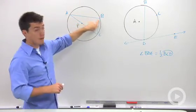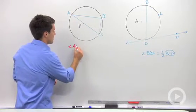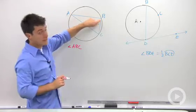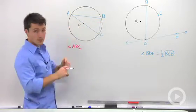And our inscribed angle we're going to call is angle ABC. So notice that the vertex is on the circle and it's part of a semicircle.